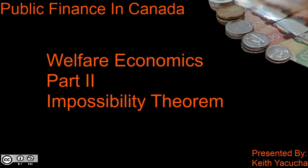Welcome back to Public Finance in Canada. I'm Keith Akucha and here we're going to be taking a look at Welfare Economics Part 2, specifically Arrow's Impossibility Theorem. While this is Part 2, it's actually the third video in this week's series. So far we've covered utility and indifference curves, the definition of efficiency, Pareto efficiency, Pareto optimality, and potential Pareto improvements. From there we explored the Fundamental Theorem of Welfare Economics, and now we're going to wrap up with Arrow's Impossibility Theorem.